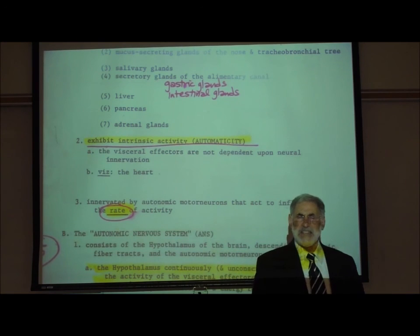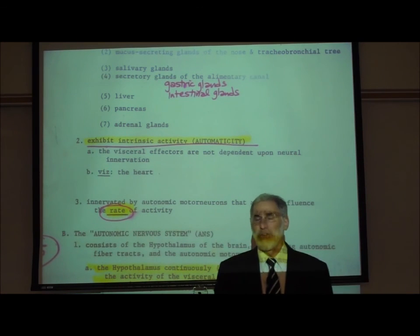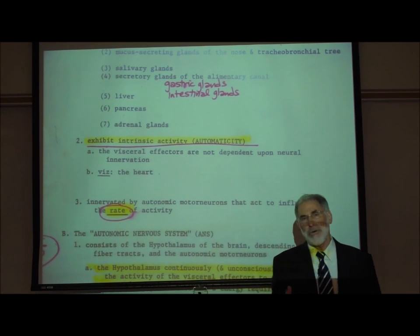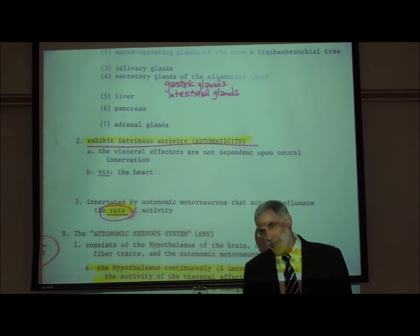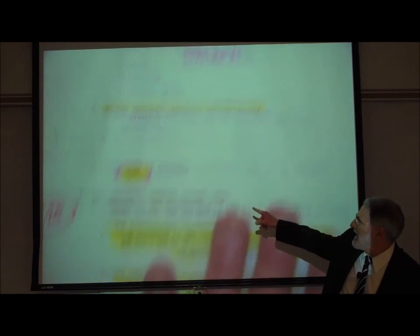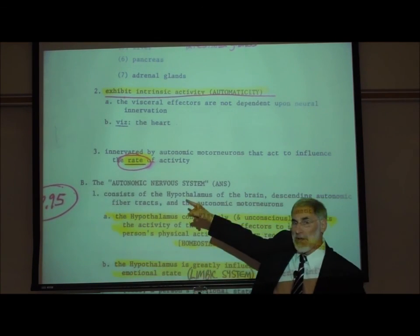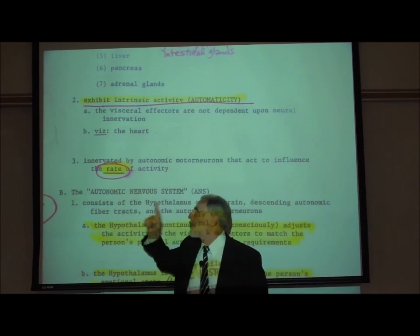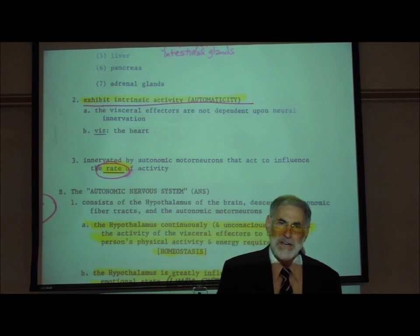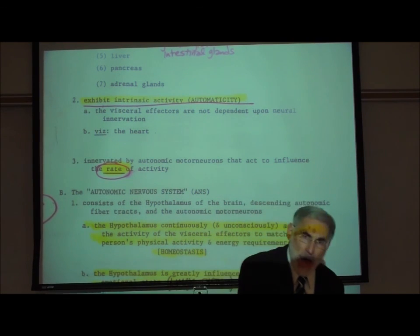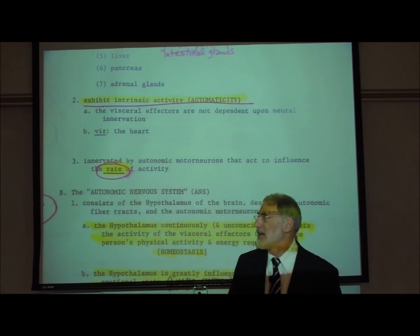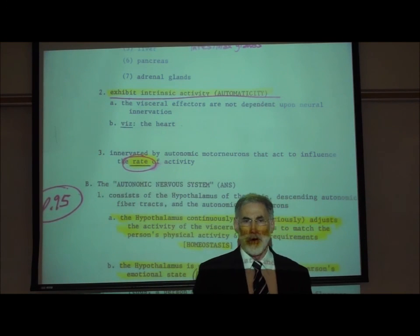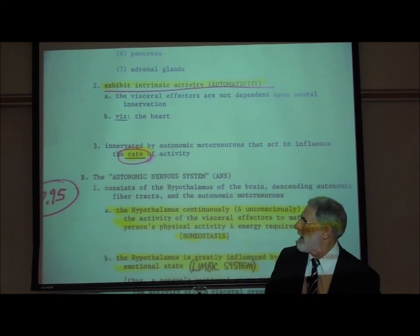If internal organs are intrinsically active and exhibit automaticity — they work automatically — then we might ask: why do you need autonomic motor neurons at all? The answer is that the visceral organs are innervated by autonomic motor neurons that influence the rate of activity. The function of autonomic motor neurons is to speed up or slow down the rate of activity. The autonomic motor neurons act like an accelerator pedal or brake pedal on the internal organs of the body.